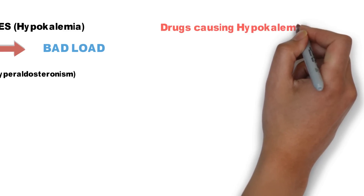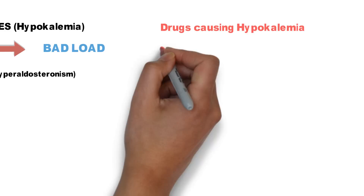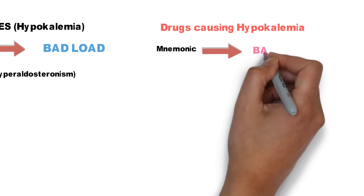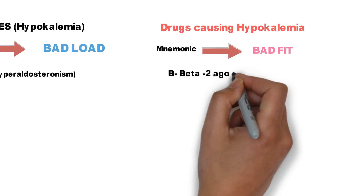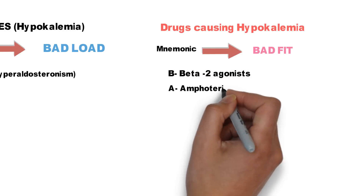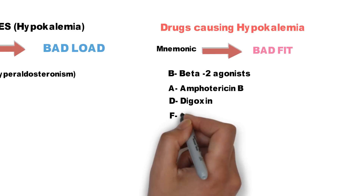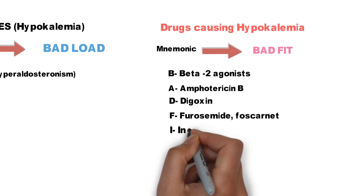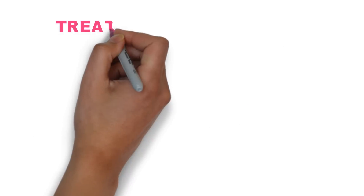Now let's learn the drugs causing hypokalemia — also one of the most frequently asked questions in medical entrance examinations. Remember this by the mnemonic BAD FIT: B for beta-2 agonist, A for amphotericin B, D for digoxin, F for furosemide or foscarnet, I for insulin, T for thiazide.